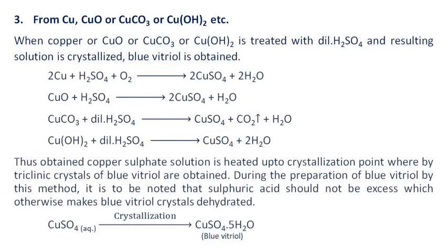From copper, cupric oxide, copper carbonate, or copper hydroxide: when any of these is treated with dilute sulfuric acid and the resulting solution is crystallized, blue vitriol is obtained. The copper sulfate solution is heated up to the crystallization point, whereby triclinic crystals of blue vitriol are obtained. It is to be noted that sulfuric acid should not be in excess, as excess acid makes blue vitriol crystals dehydrated.